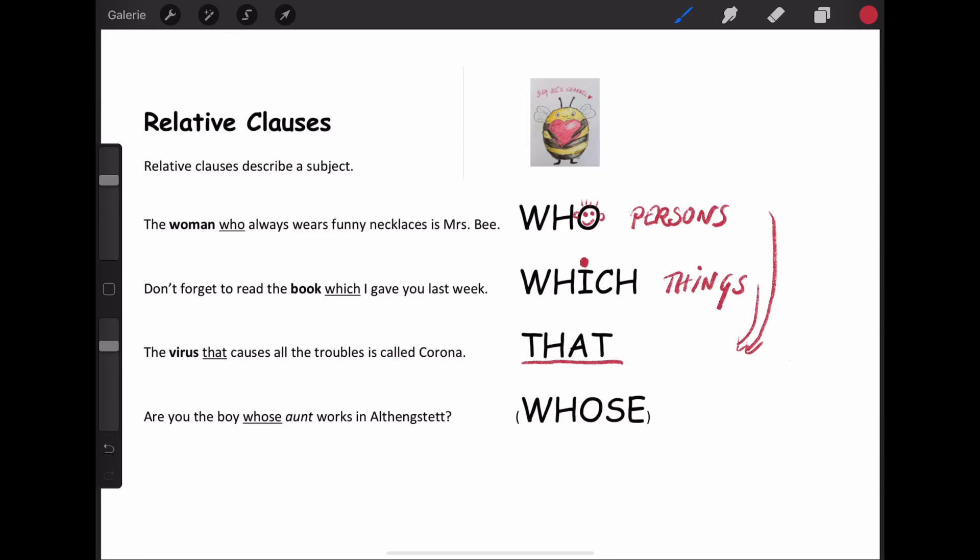There is a little special one. It's the whose. Whose you can see here the word that is printed in a different way. Are you the boy whose aunt works in Althengstädt. Whose is deren or dessen. And you use it in combination with a person that is behind the word whose. Okay. But you don't really need that that often. So again. Who is for person. Which is for things. And that is possible for anything.